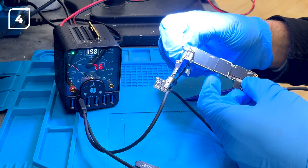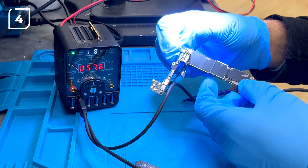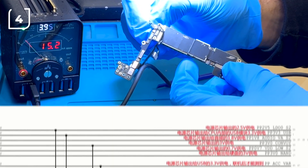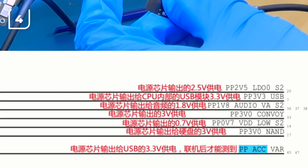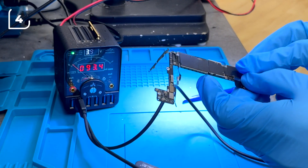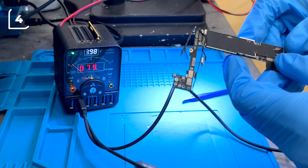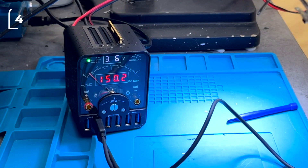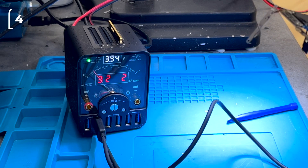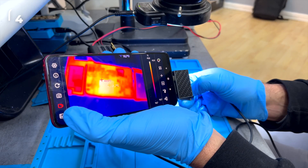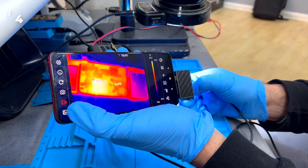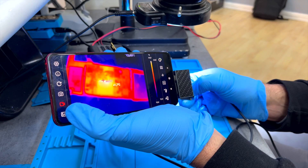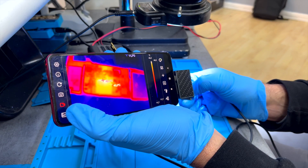Fourth: we short the 250 mA LDO6 line corresponding to the PPACCVAR line at capacitor C2906. We observe an unusual consumption rate — it goes up and down and heats the PMU, but the hot zone has nothing to do with the shorted line.